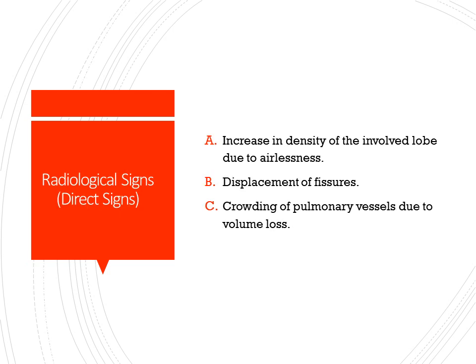What are the radiological signs? Radiological signs of collapse can be divided into Direct Signs and Indirect Signs. Direct signs include an increase in density of the involved lobe due to airlessness, displacement of the fissures, and crowding of pulmonary vessels due to volume loss.